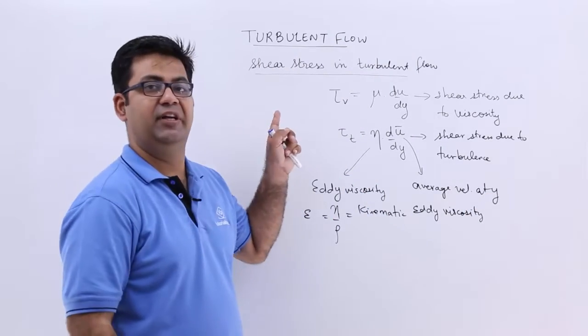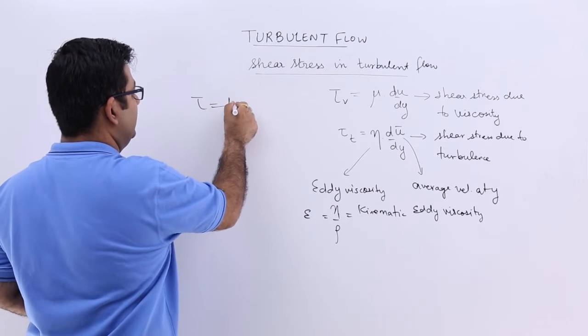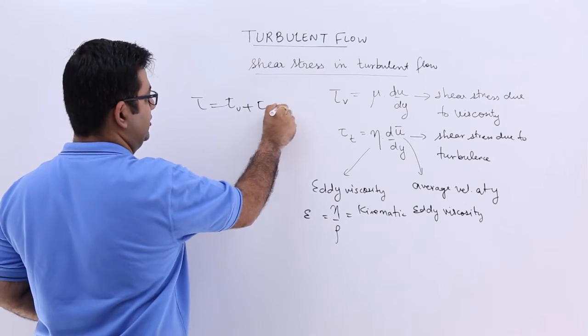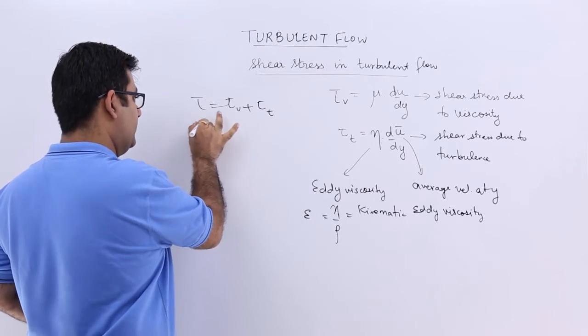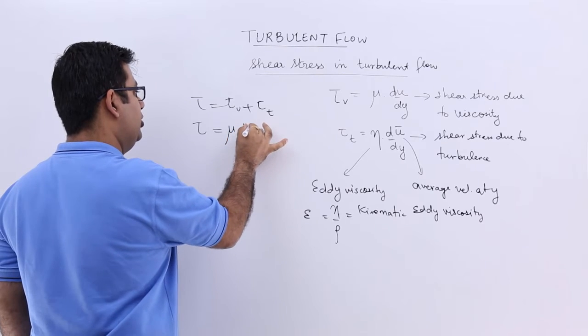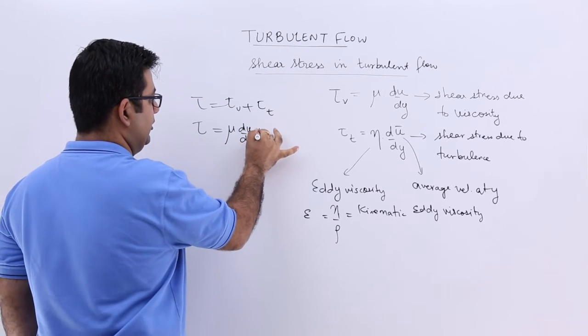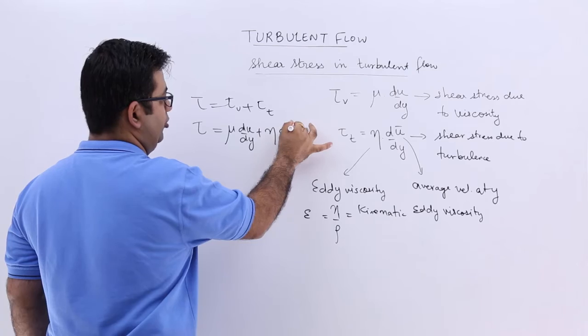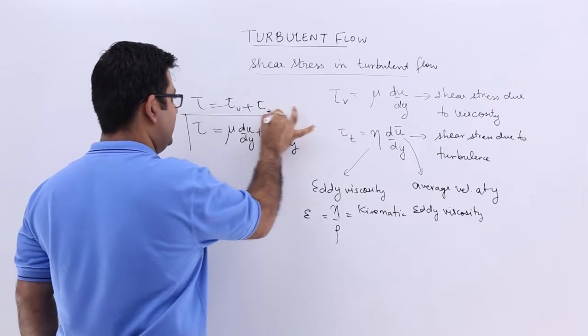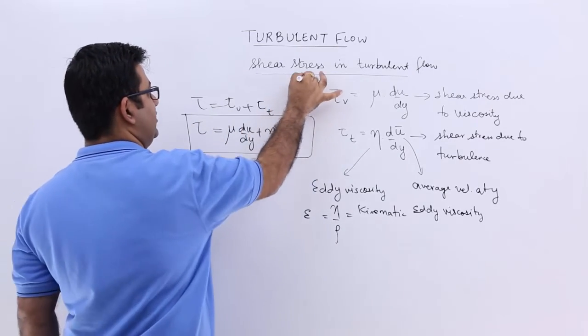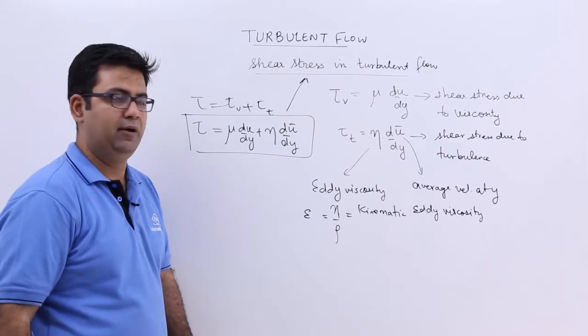The total shear stress would be tau equals tau v plus tau t. This would become mu into du upon dy plus eta into du bar upon dy. This is the total shear stress in the turbulent flow.